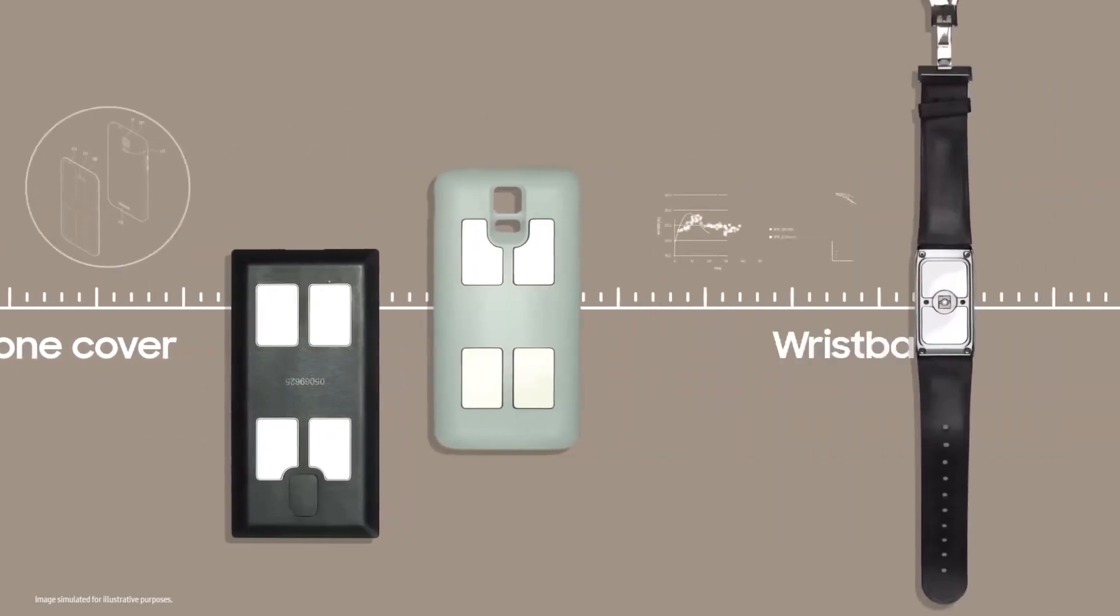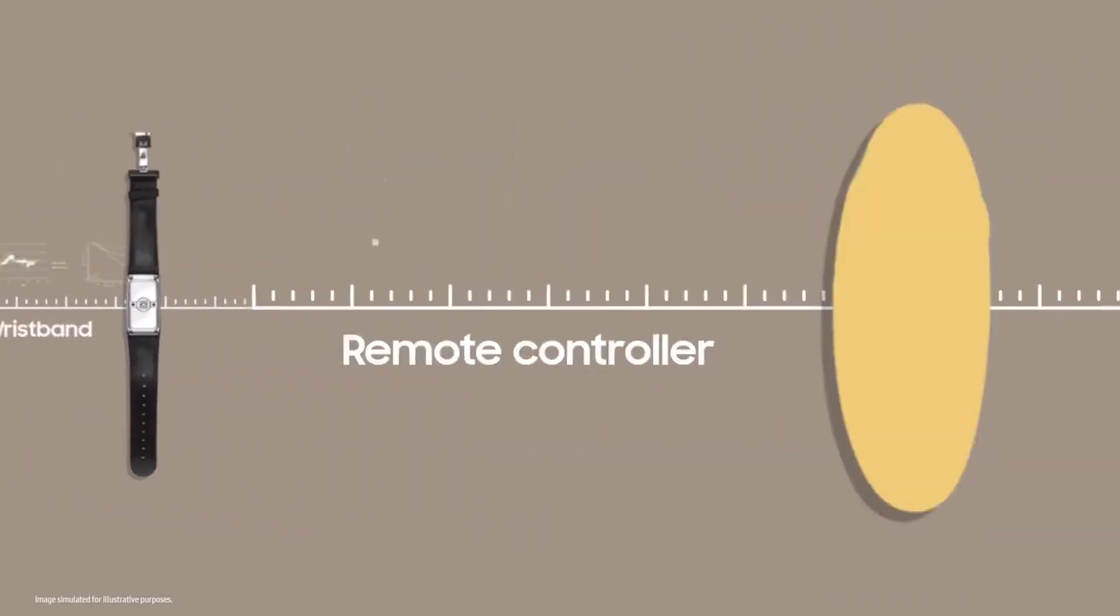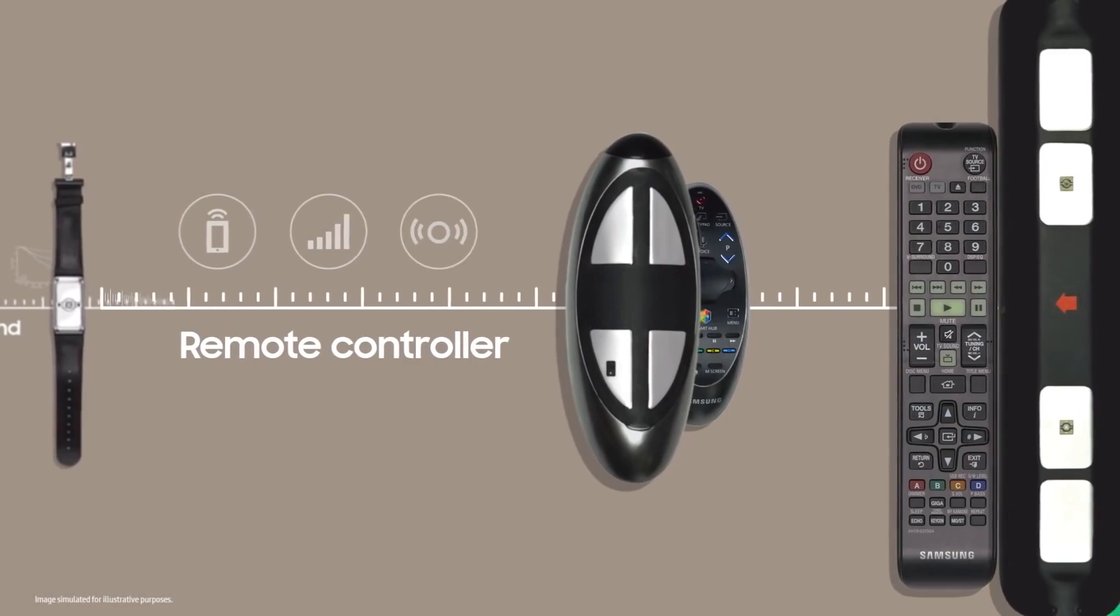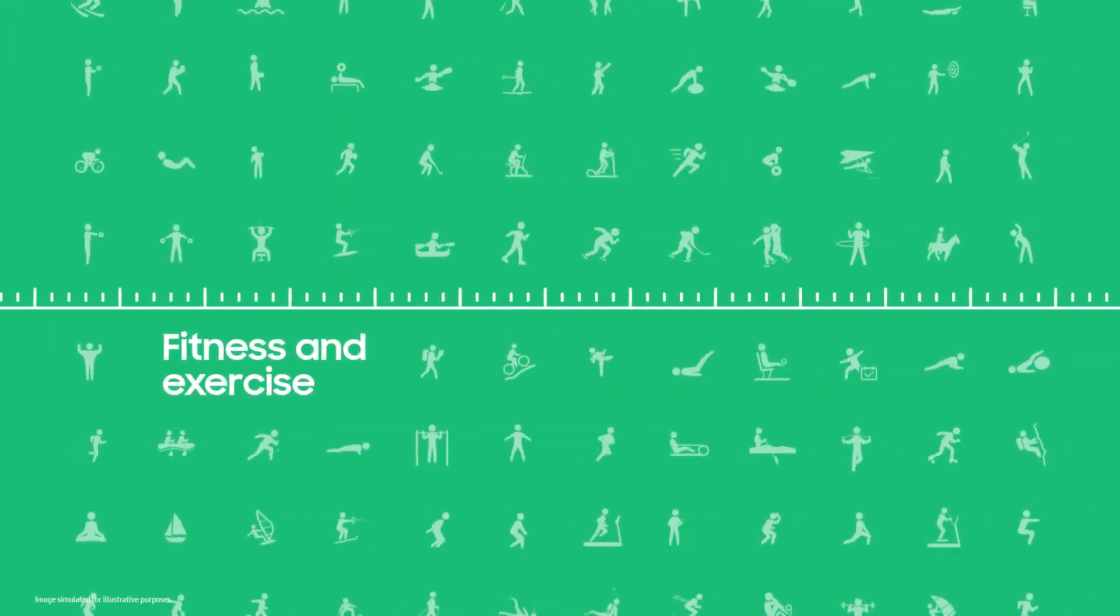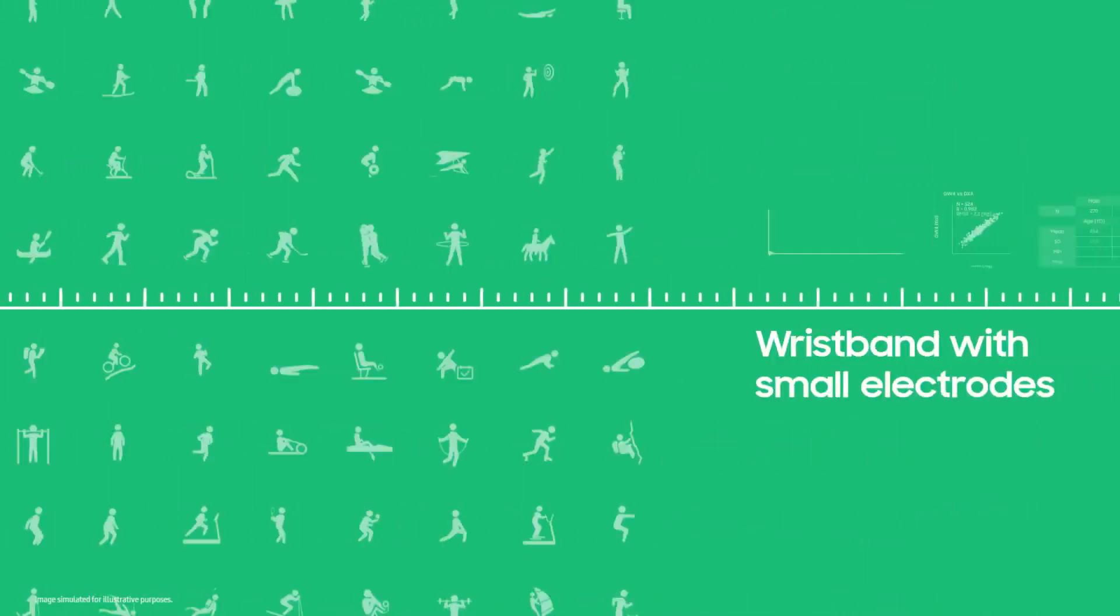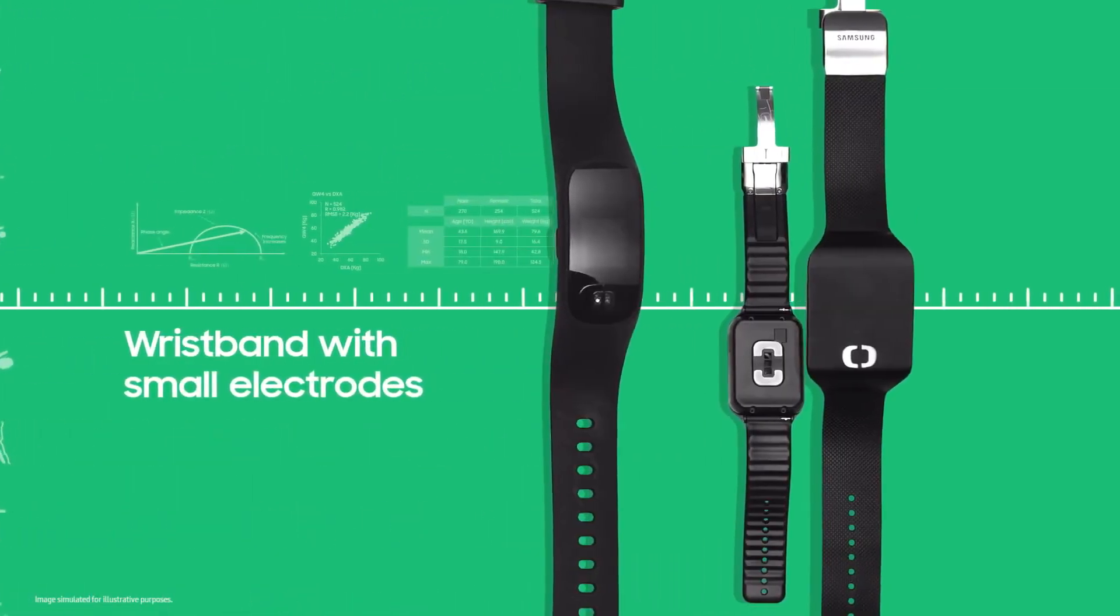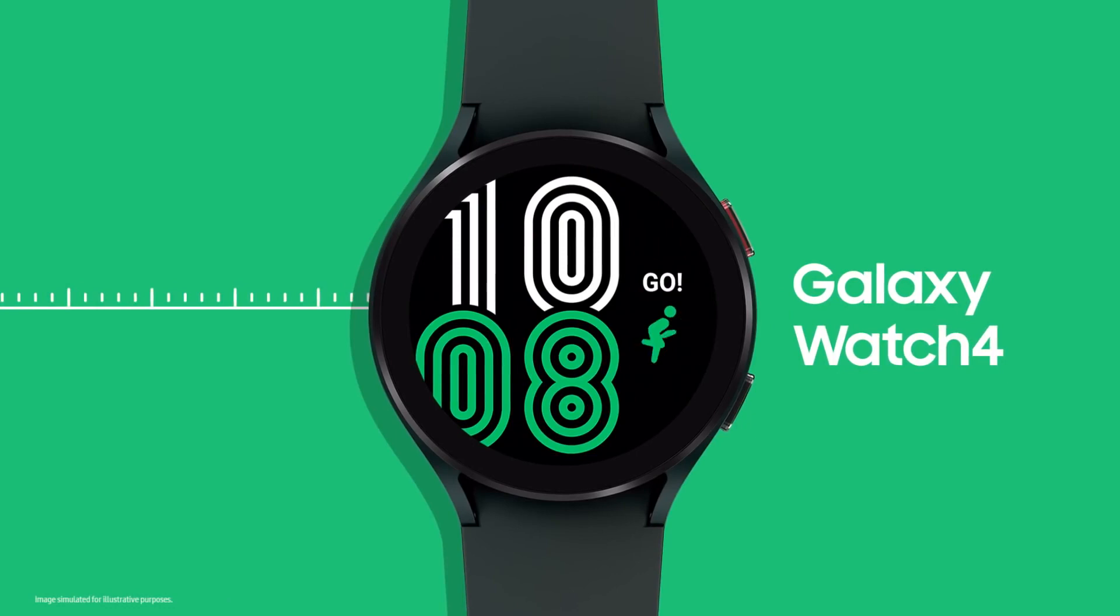At first, we tried adding it to phone cases and wristbands. We even tried to incorporate the technology onto remote controllers. But given how closely body composition is tied to fitness and exercise, we realized that the best device to deliver this technology was the Galaxy Watch.